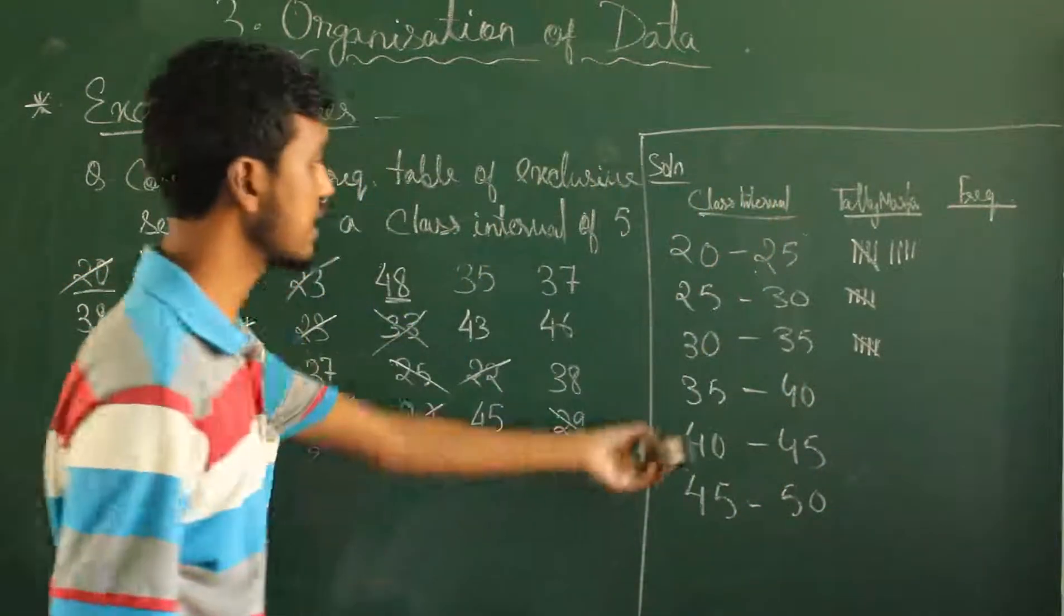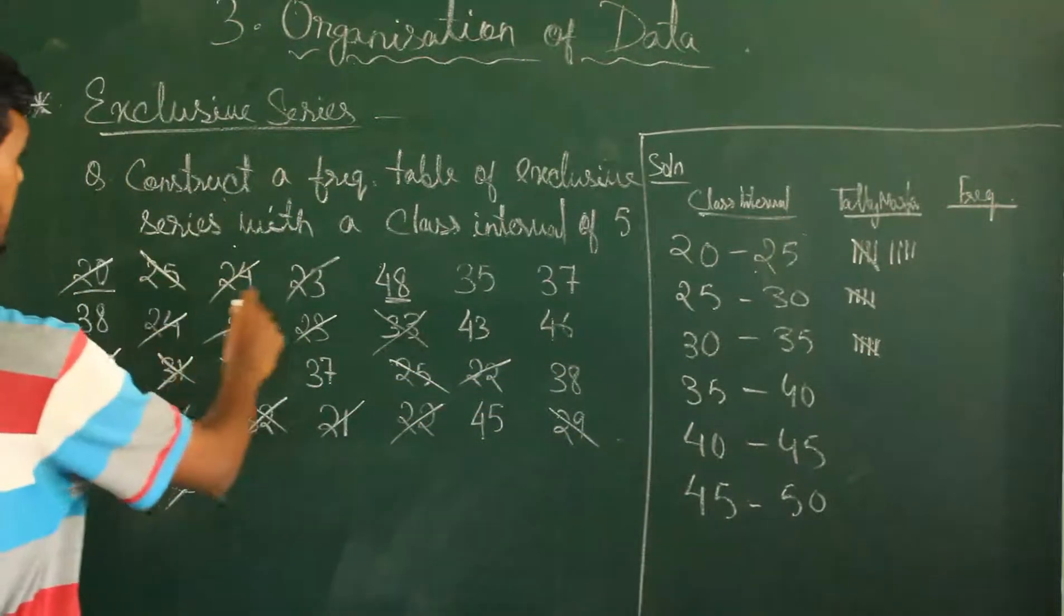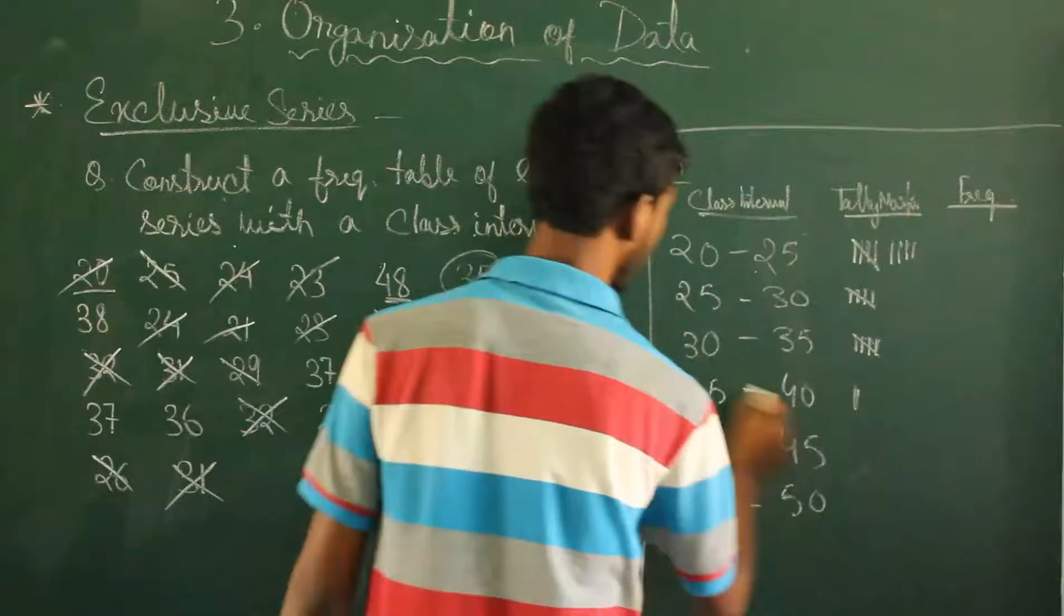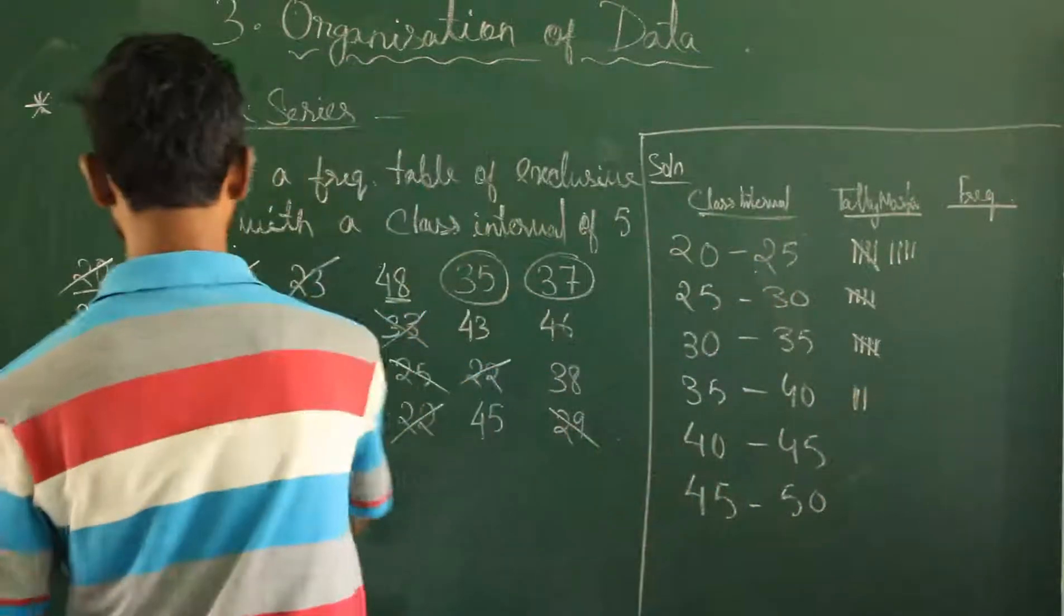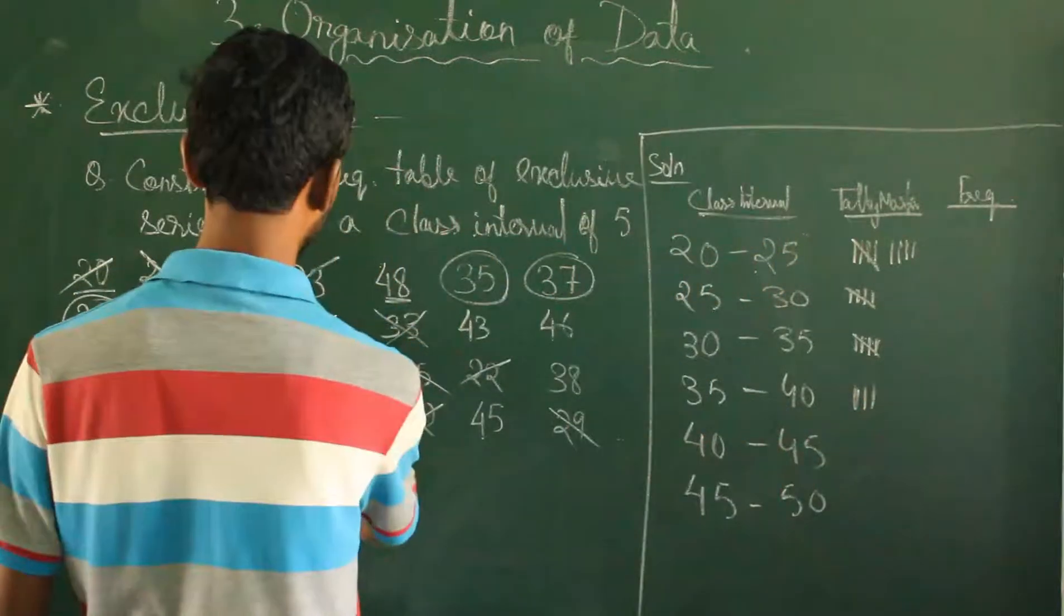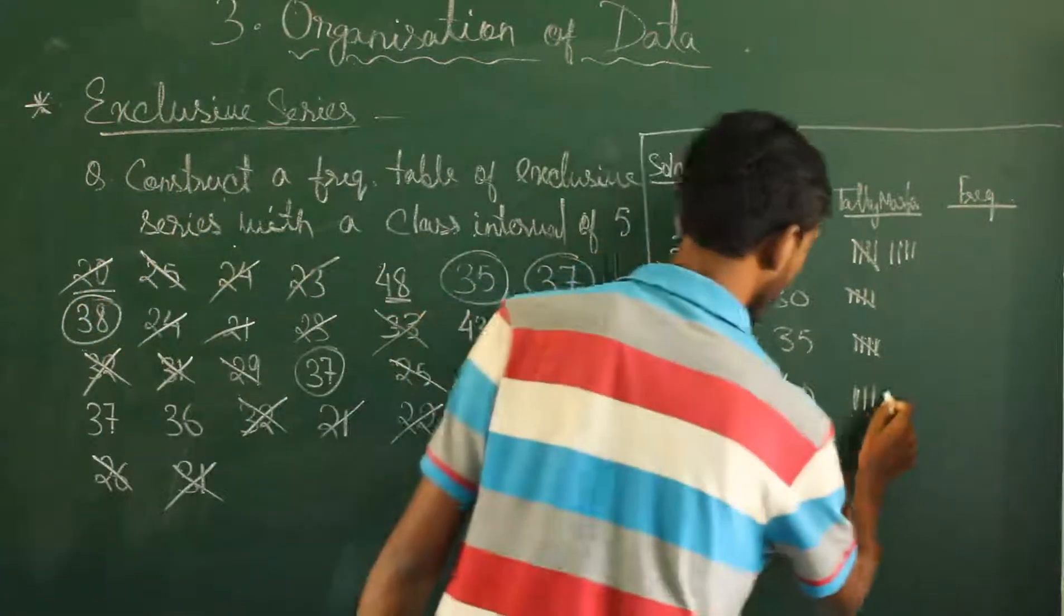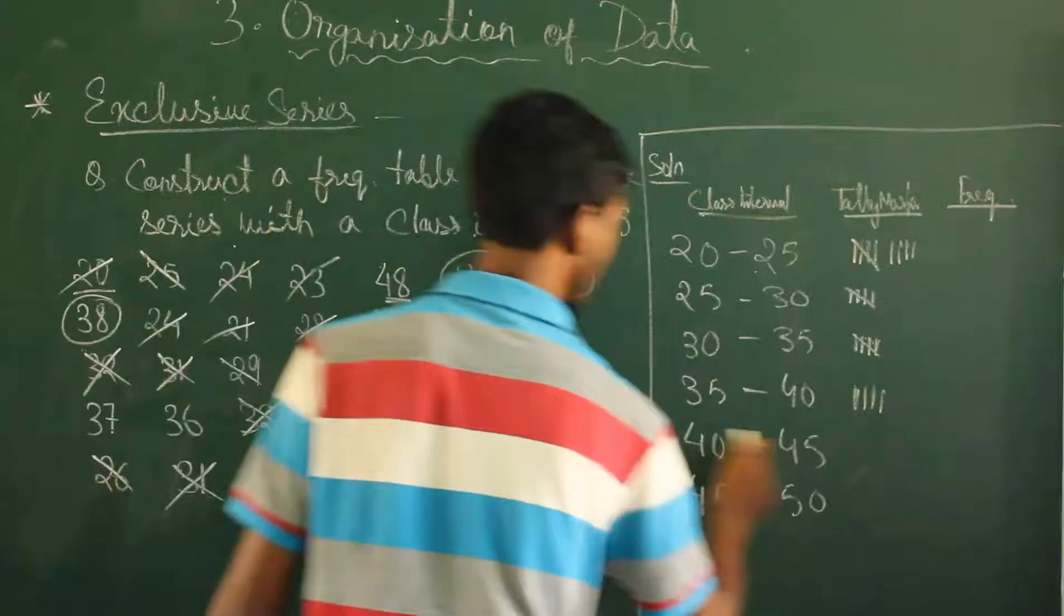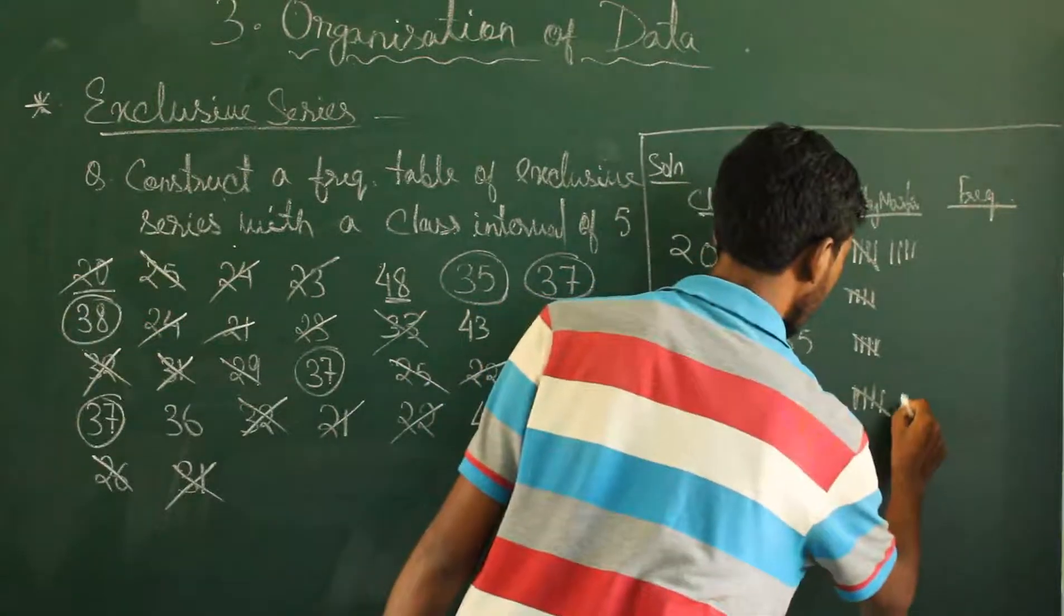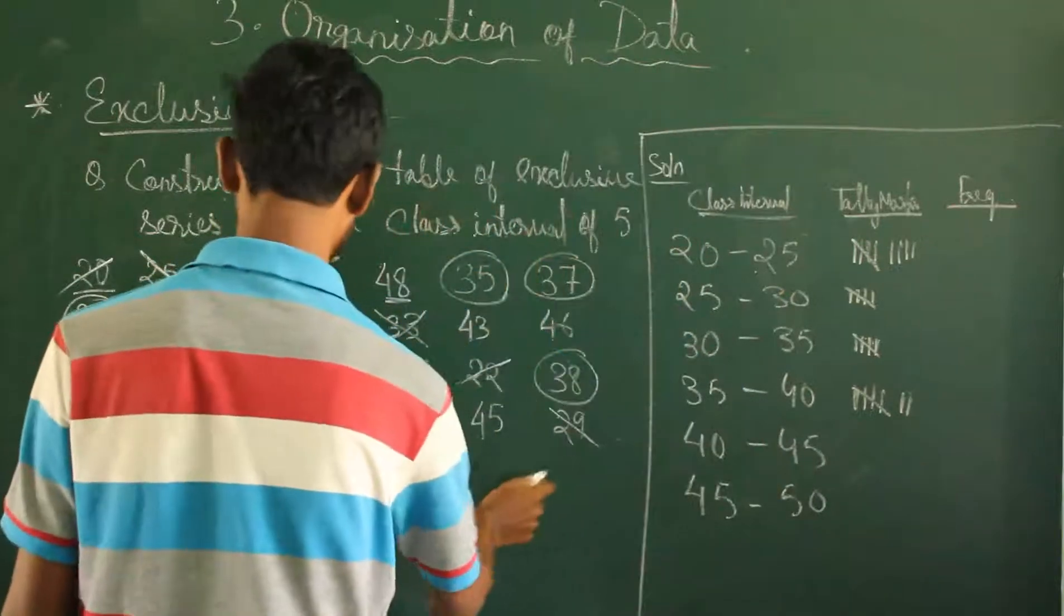Next 35 to 40. We count 35, 37, 38, 37, and mark the tallies.